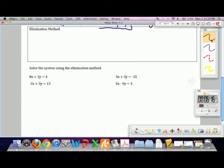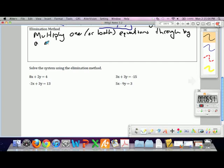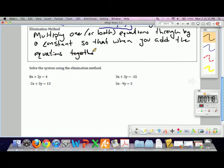The elimination method is something we're going to be using a lot tomorrow, and the same ideas and concepts when we talk about matrices later. In particular, elimination is just that. We're going to multiply one equation, one or both equations through by a constant. You're going to choose the constant so that when you add the equations together, one variable is eliminated.